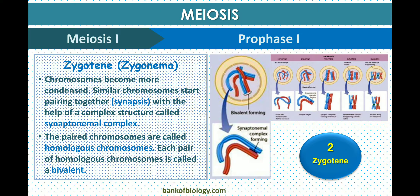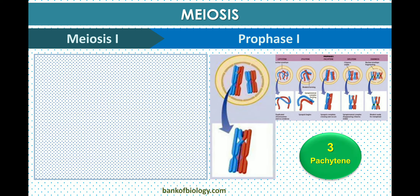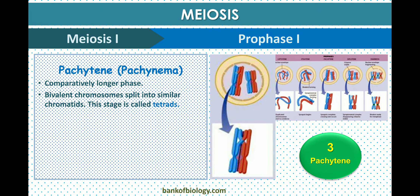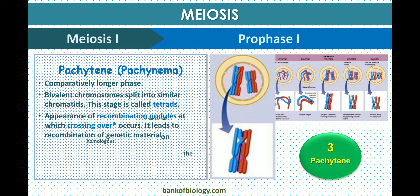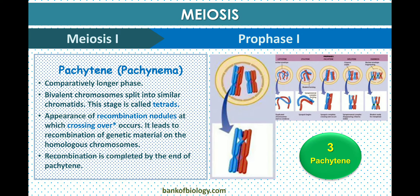The third stage is pachytene, also called pachynema. This is a longer phase in which each bivalent chromosome splits into chromatids — this stage is called a tetrad because four chromatids are present. Recombination nodules appear at sites where crossing over occurs, leading to recombination of genetic material on homologous chromosomes. Recombination is completed by the end of pachytene.